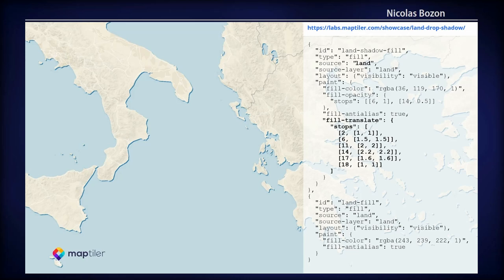There are many other things we can do with the fill property. In this example from our labs — accessible at the link on top of the slide — we tried to create a land drop shadow effect by overlaying two fill layers. The land shadow fill layer is placed below the land fill layer and is translated a bit to create that drop shadow, with the translate value changing according to zoom level.